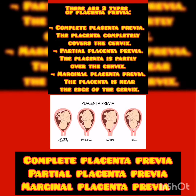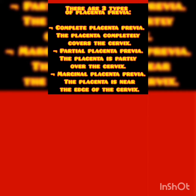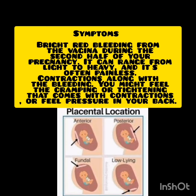Basically placenta की तीन types होती हैं: Complete Placenta Previa, Partial, और Marginal. Complete में पूरा मुँह के आगे आ जाता है, Partial over the cervix होती है, और Marginal जो है वो the edge of the cervix पर होती है।